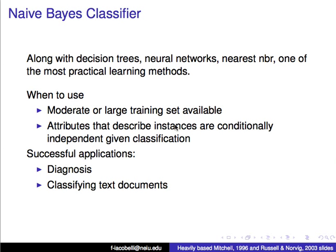Along with decision trees, neural networks, and nearest neighbors, one of the most practical learning methods is the Naive Bayes classifier. In many ways there are better algorithms than this, but this is a seminal algorithm from which a lot of other algorithms stem. It has made it an algorithm that many people compare their new algorithms to. And on top of that, it's not so bad — it actually performs fairly well for many tasks.